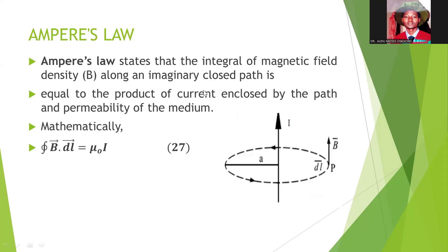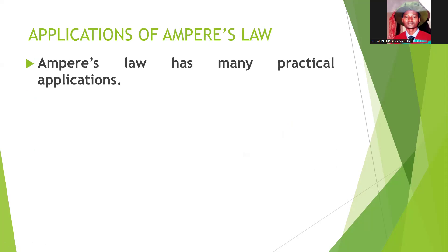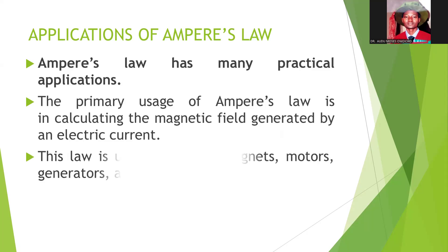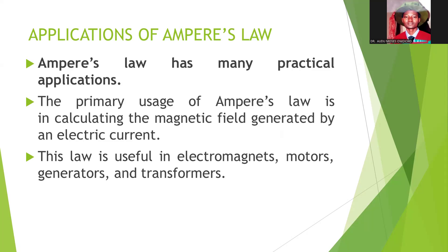Let's look at Ampere's law. Ampere's law states that the integral of magnetic field density along a circular path is equal to the product of the current enclosed by the path and the permeability of the medium. Mathematically, the closed integral of the magnetic flux times the small segment of the conductor equals the permeability of the medium times the current, as given by equation 21. Ampere's law has applications in electromagnets, motors, generators, and transformers.